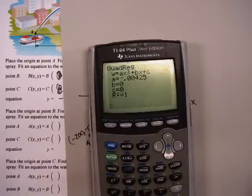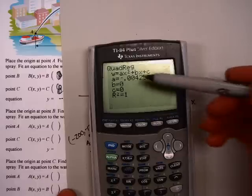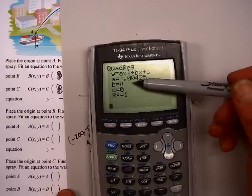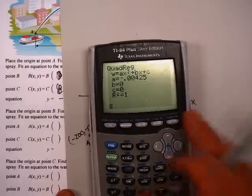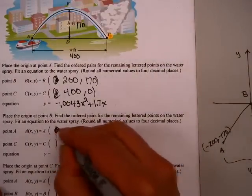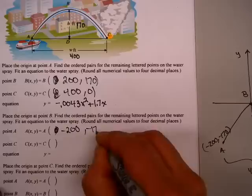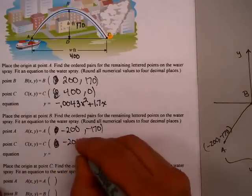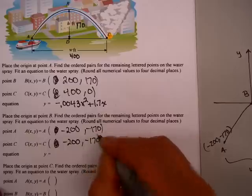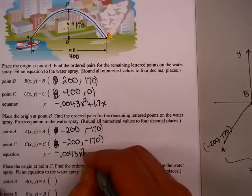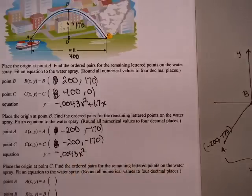Y equals ax squared plus bx plus c. Notice a, again, is minus .00425, rounded to four decimal places. That's -.0043. B and c are zero. So, in this case, here's our answers. So, a was minus 200 minus 170. B is minus 200 minus 170. And y is equal to minus .0043x squared plus no b and no c because both b and c are zero.